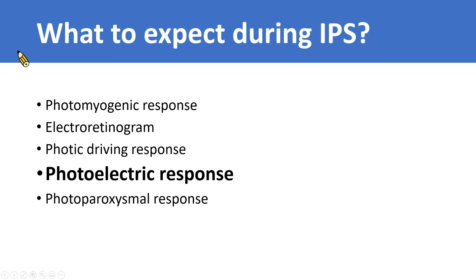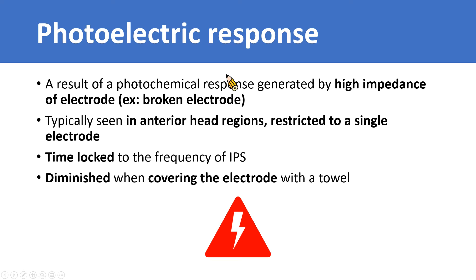Let's move on to photoelectric response. Photoelectric response is a result of a photochemical response generated by high impedance of an electrode, such as when an electrode is broken. Like other responses during IPS, photoelectric response is typically seen in anterior head regions and is restricted to a single electrode, especially the broken one. It also has a time lag feature relative to the frequency of IPS, and diminishes when covering the electrode with a towel.